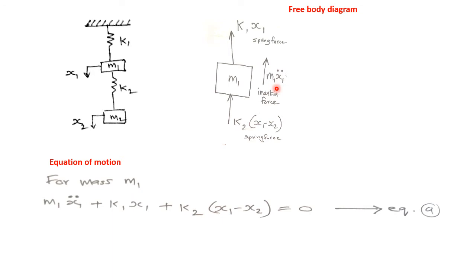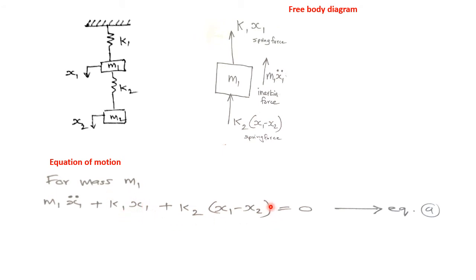The equation of motion for mass M1 is: M1·Ẍ1 + K1·X1 + K2·(X1 − X2) = 0. We have applied D'Alembert's principle — that is, the net force plus the inertia force equals zero. The net force is the spring forces K1·X1 and K2·(X1 − X2), and together with the inertia force they equal zero.